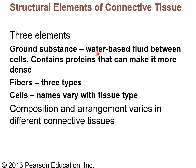Fibers embedded in the ground substance include three types: collagen, elastic, and reticular fibers. The cells in connective tissue have names depending on which type of connective tissue it is. The composition and arrangement — how much ground substance, how thick it is, what type and how many fibers, and how many cells — depends on the specific type of connective tissue.